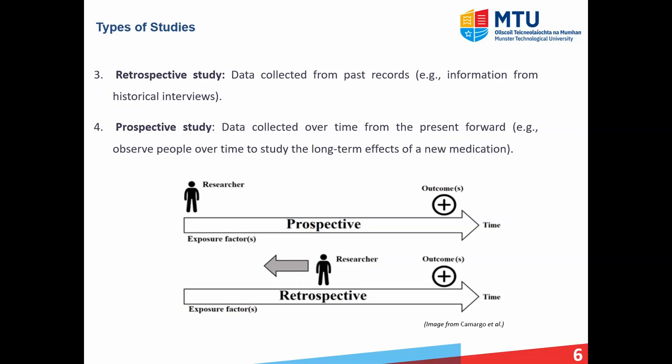Next, we have a retrospective study, where data is collected from the past — for example, information from historical interviews. So you as a researcher are looking back and getting that information. A prospective study, then, is the opposite — that's where data is collected over time from the present moving forward, and you might collect data at various times in the future.